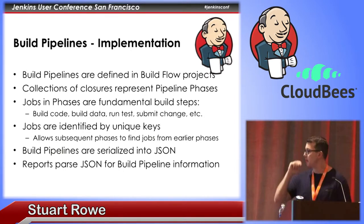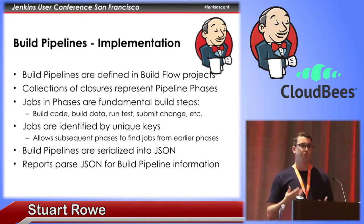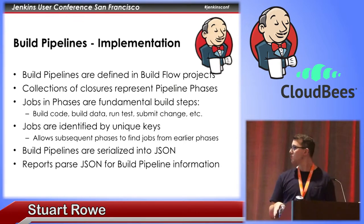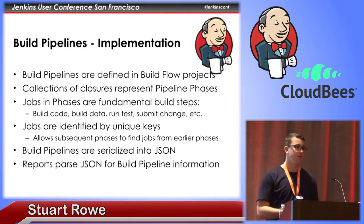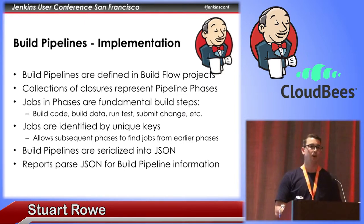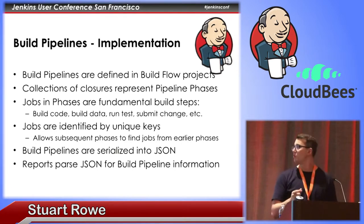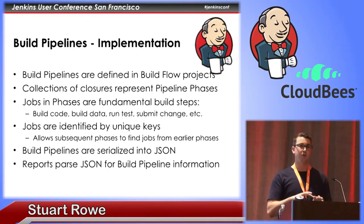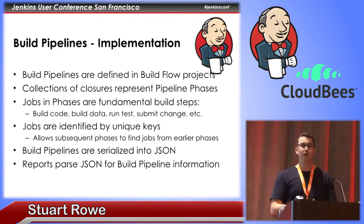Our build pipelines rely extensively on the build flow plugin for orchestration. The build phases and test phases are each described as a collection of closures that execute the necessary jobs. Each of those jobs is one of our fundamental build steps such as building code, building data, running a given test, and submitting changes. We identify jobs by assigning each a unique key, so a test phase job that needs to refer to a build can look up that build from the previous phase. We then serialize all the pipeline information into JSON, which can be used to easily create reports from.